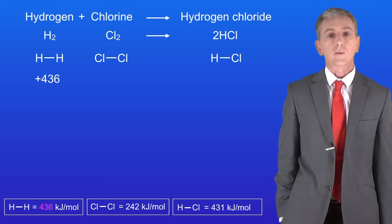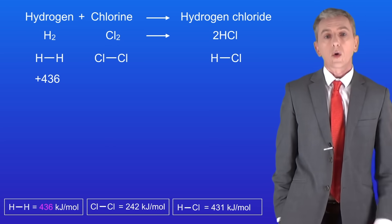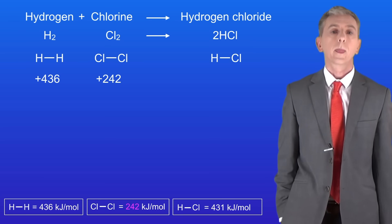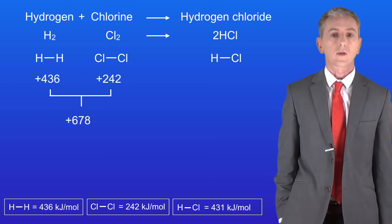Breaking the bond between the chlorine atoms requires 242 kilojoules per mole. And again, this needs a positive sign. So here's that value. If we add these values together, we get plus 678 kilojoules. This is the total amount of energy needed to break all of these chemical bonds.